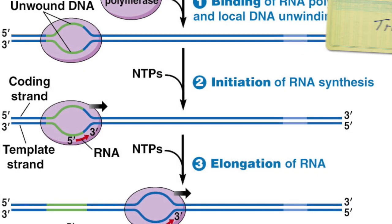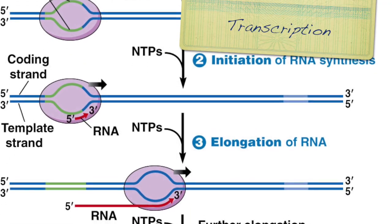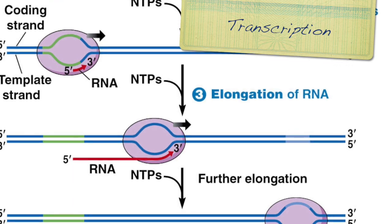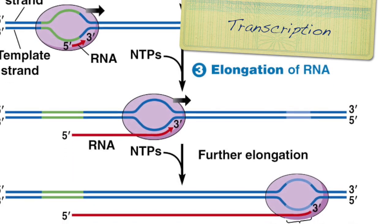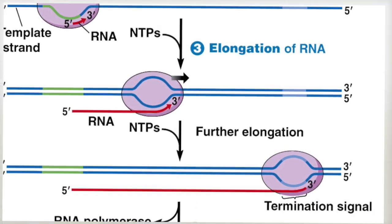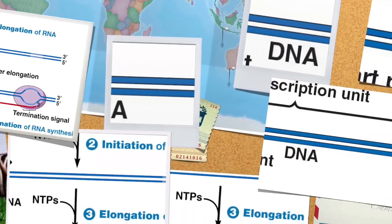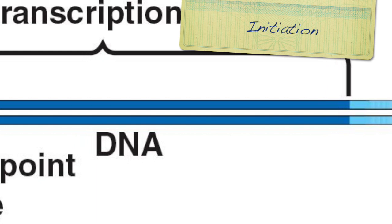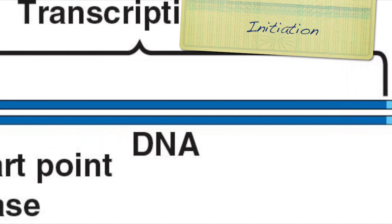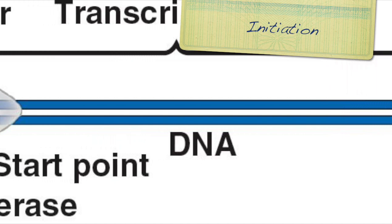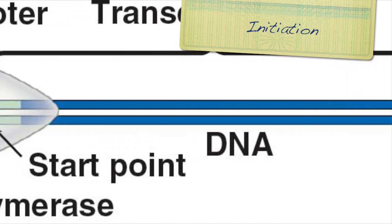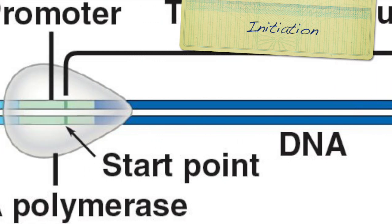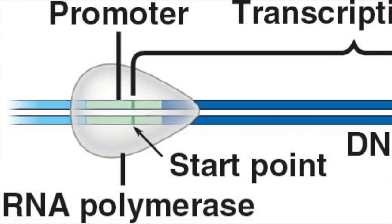First, Ziggy went through a process called transcription, where DNA is transcribed to make RNA. The first step of transcription is initiation. This is where RNA polymerase binds to the promoter, or starting point, on DNA.